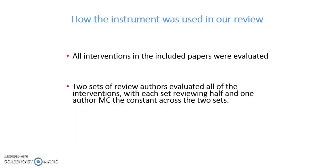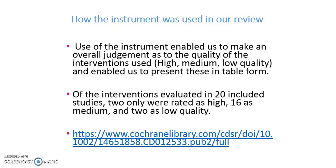How did we use the instrument in our review? All interventions in the included papers were evaluated. Two sets of review authors evaluated all of the interventions, each set reviewing half, and one of the authors — myself — was the constant across the two sets. Consequently, I evaluated all of the included studies and worked with one other member of the team to decide on the overall quality rating. Use of the instrument enabled us to make an overall judgment as to whether interventions scored high, medium, or low quality, and enabled us to present these in table form. Of the interventions evaluated in the 20 included studies, two only were rated as high, 16 as medium, and two as low quality.